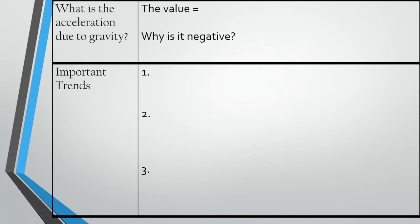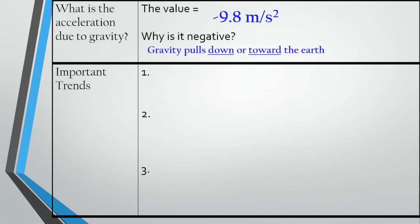The first thing we want to talk about is the acceleration due to gravity. The acceleration due to gravity is going to be defined by a value, and that value is negative 9.8 meters per second squared. This is telling us that gravity accelerates objects down towards the Earth at a rate of 9.8 meters per second squared — so every one second, our velocity is changing by 9.8 meters per second.